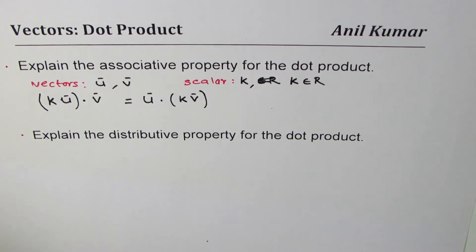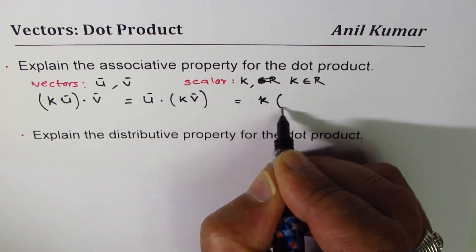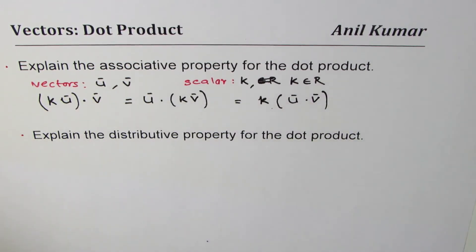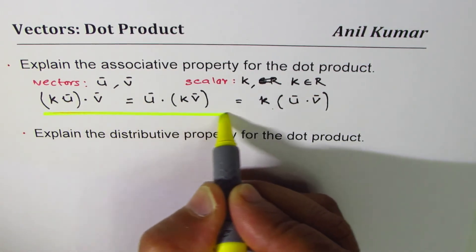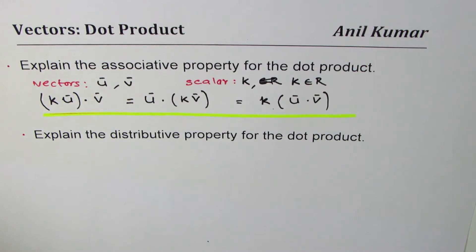You could also do scalar times the dot product, so all three are true. This is very important to understand - scalar multiple and dot product, the order doesn't matter. That's what we're trying to say here with associative property of dot product. Associative property is not between product of three vectors, remember that.